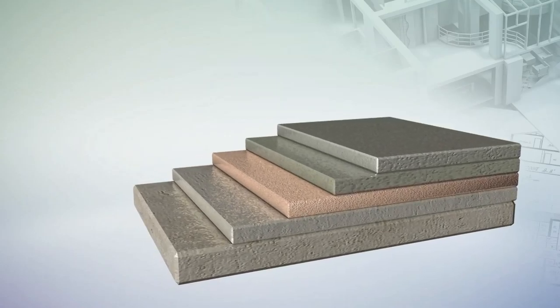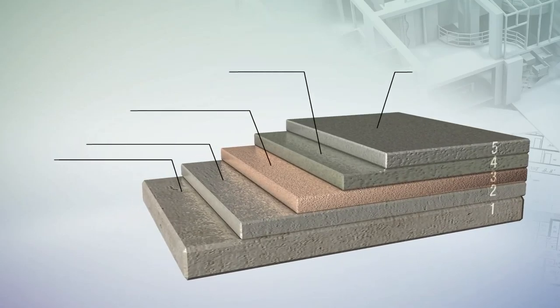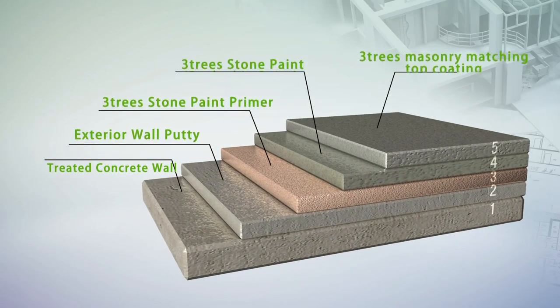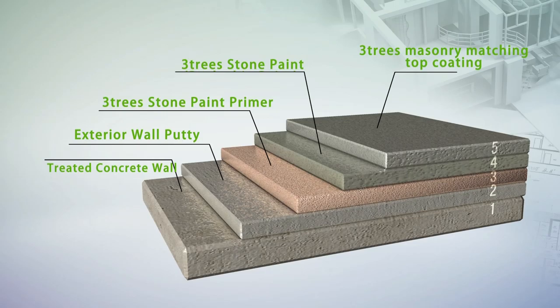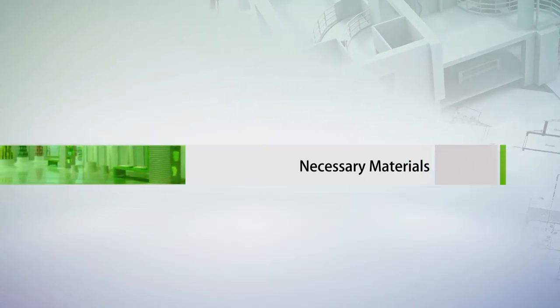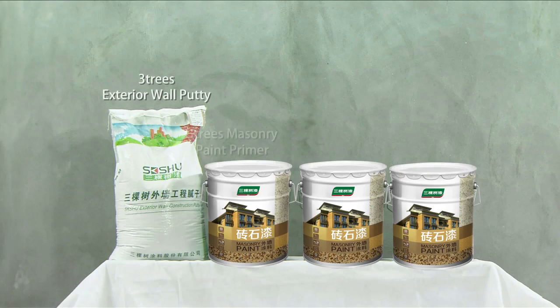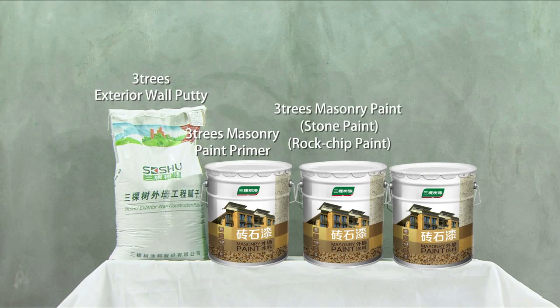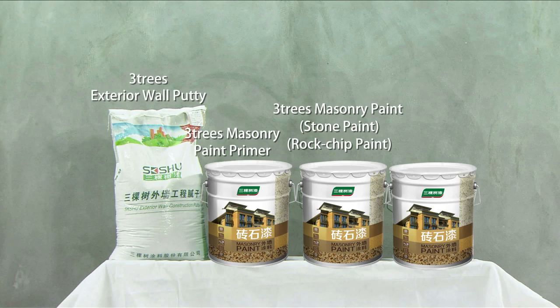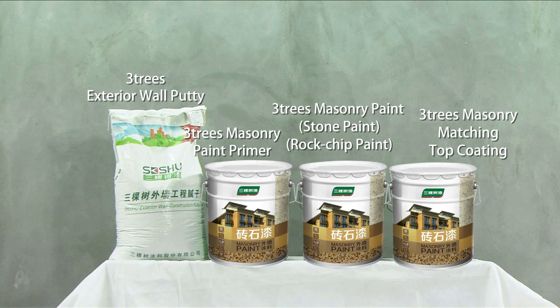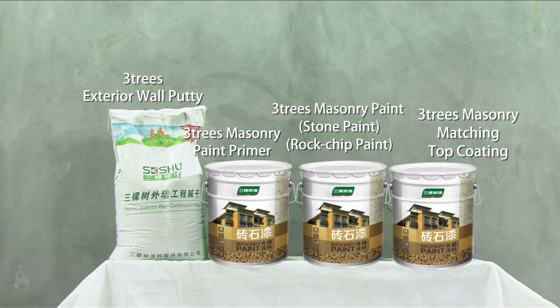Now we'll give you a detailed introduction about the application process of Stone Paint Rock Chipped Paint. Materials in need: Three Trees Exterior Wall Putty, Three Trees Masonry Paint Primer, Three Trees Masonry Paint Stone Paint Rock Chipped Paint, Three Trees Masonry Matching Top Coating.